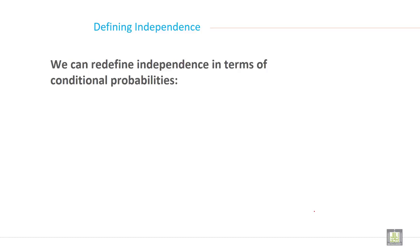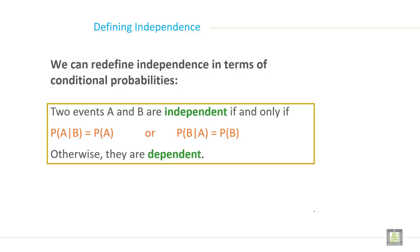Now defining independence. We can redefine independence in terms of conditional probability. Two events A and B are independent if and only if probability of A given B equals probability of A, or probability of B given A equals probability of B. Otherwise, they are dependent.